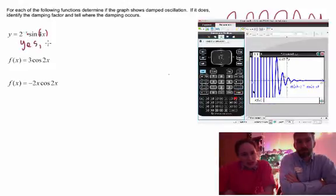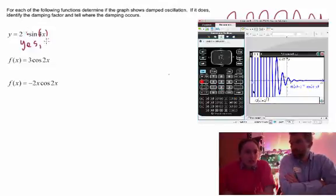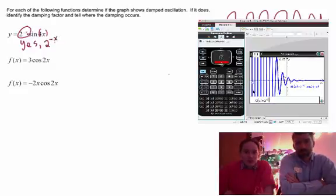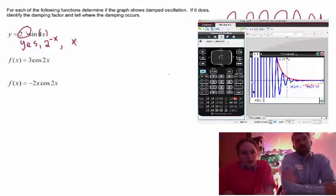And this does have damped oscillation, so we'd say yes it's damped. And if it is damped we have to say what the damping factor is, and that's just going to be whatever's in front of our trig function, whatever that multiplication situation is. So the damping factor is 2 to the negative x.